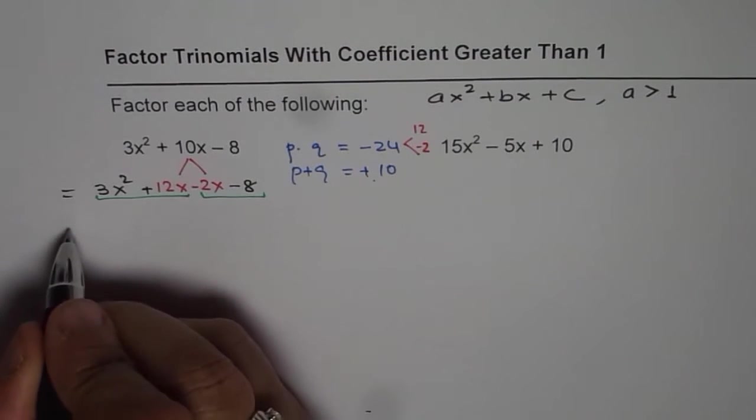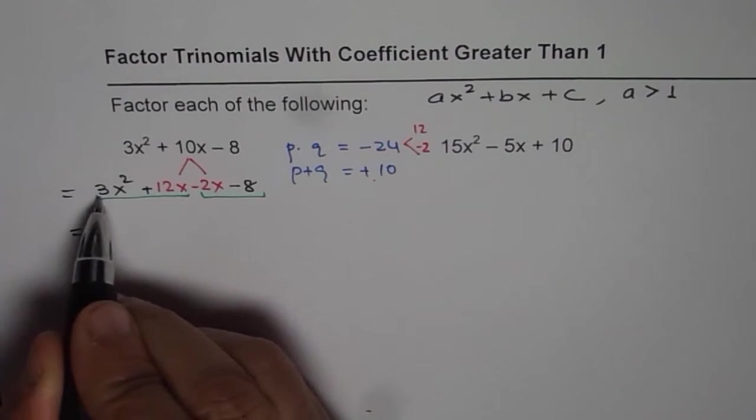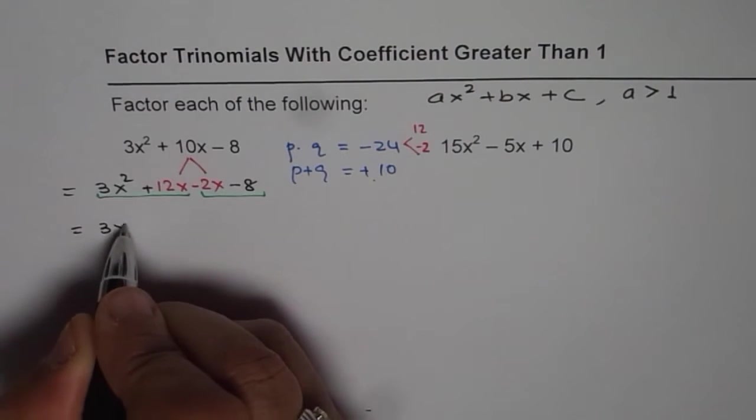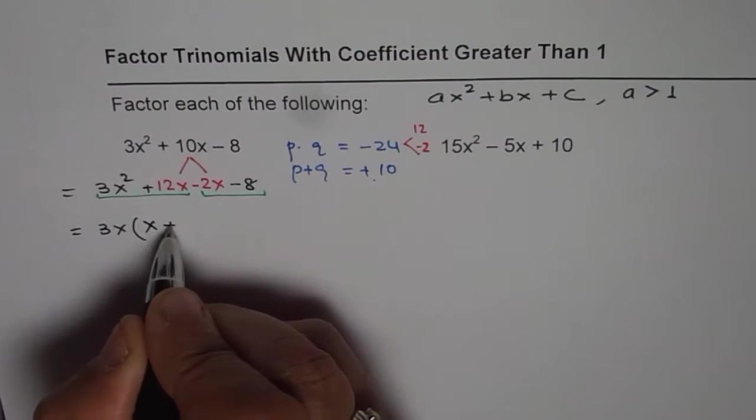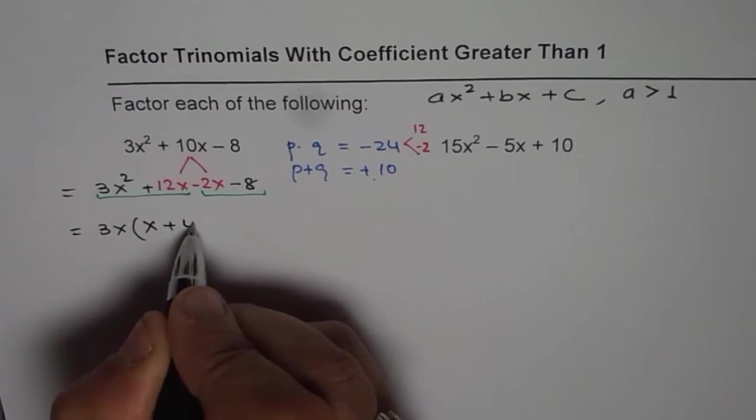And factor. So what is common between these two terms? 3 times x. So let us factor 3x. We are left with x here and 12 divided by 3 is 4. x is already taken out. So we get 4 here.